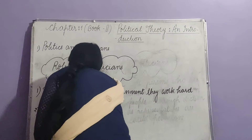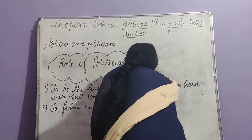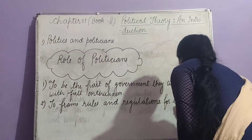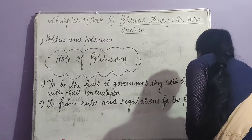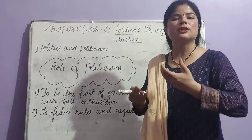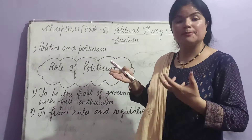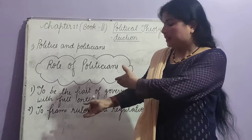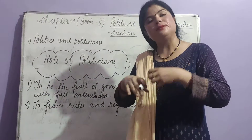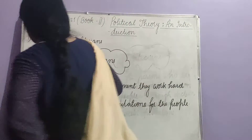Second role: to frame rules and regulations for the people. As we came to know in our previous lecture about legislature and executive — the organs of government — the people who become politicians and become part of the legislature frame rules and regulations for the common people so that they can follow them and lead a very good life without any disturbance.